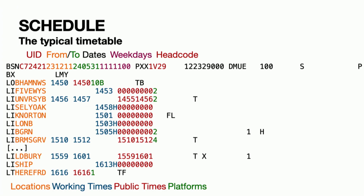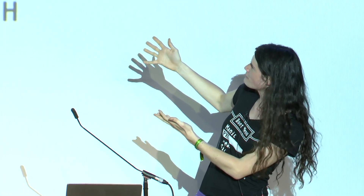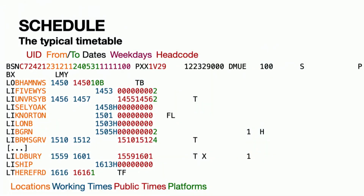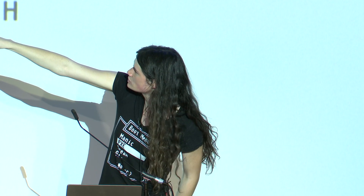Starting from the beginning: timetables. If you want to know what trains are meant to run, there's one data feed called the schedule feed. It's published by Network Rail, the organization that owns the train tracks and does all the signaling and scheduling. It's in this kind of horrible ASCII format called CIF — I promise it's not actually that bad. You can see on top there's the UID, that's the ID for the schedule.